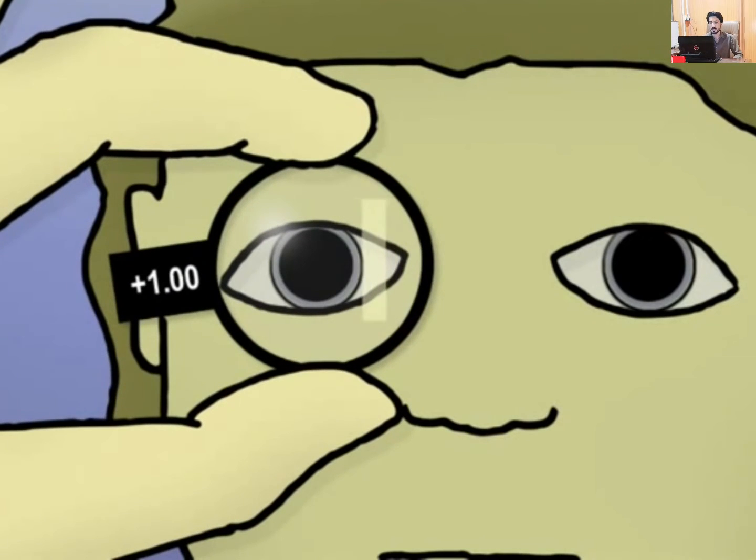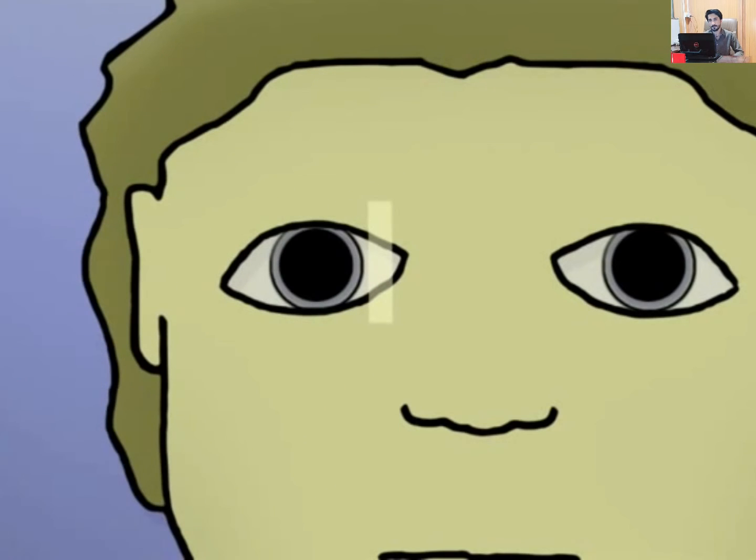So let's hold up a plus one lens, add a little bit of power. And the light, the reflex is still going in the same direction. So we're not quite there yet. You notice that the red reflex, that line back there, looks a little bit thicker than it did before. So it's gotten a little bit bigger, but we still have with motion.